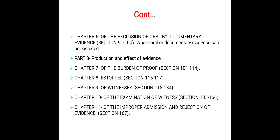Part 3 contains five chapters: Chapters 7, 8, 9, 10, and 11. Chapter 7 deals with burden of proof and presumptions. Chapter 8 deals with the subject of estoppel. Chapter 9 deals with witnesses who are competent to testify. Chapter 10 deals with examination of witnesses. Chapter 11 deals with the effect of improper admission and rejection of evidence.